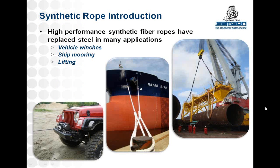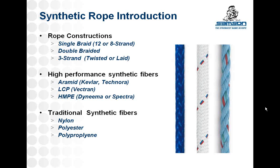High performance synthetic ropes have successfully replaced steel wire ropes in many industries. Vehicle winches for recreational and industrial use are now commonly offered with high performance synthetic lines. Commercial shipping vessels have been running high performance synthetic lines for some time. The superior handling characteristics and long service life have easily justified making the switch. Heavy lifting is another application revolutionized by high performance synthetics — the reduced rigging weight and ease of handling make for a safer and more controlled lift.